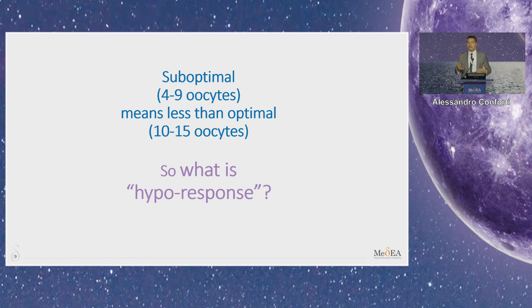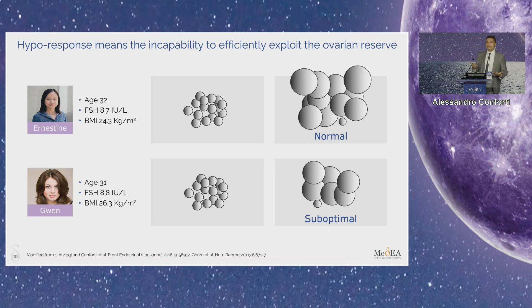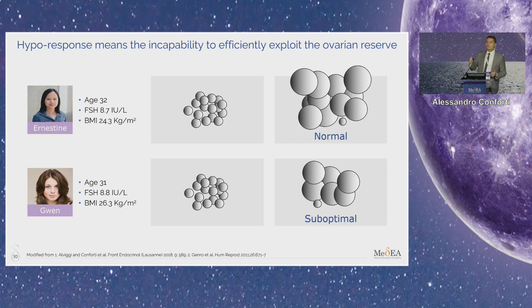But what is the hyper-response? Because sometimes there is confusion about mixing the hyper-response with the suboptimal response. While the suboptimal response is just the number of oocytes, the hyper-response means our incapability to efficiently exploit the ovarian reserve. In this case, we have a discrepancy between what we have at the beginning of the cycle in terms of antral follicle count and what we collect at the end of the stimulation in terms of follicles at triggering or oocytes retrieved. So it is a dynamic concept, not a static concept.